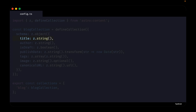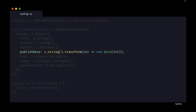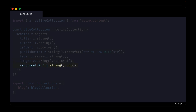The schema is a Zod object which contains all of the properties and data from our blog posts' front matter. The title is of type string. The author is also of type string. Is draft is a boolean type. Publish date is of type string, but notice how we are also using the transform function from Zod to turn our date string into a JavaScript date object. Tags is an array of strings. Image is of type string but it is also optional — everything in Zod is required by default, so you have to explicitly tell it when something is optional. The canonical URL is of type string, but it has to be of type URL. Finally, we export our blog collection schema.